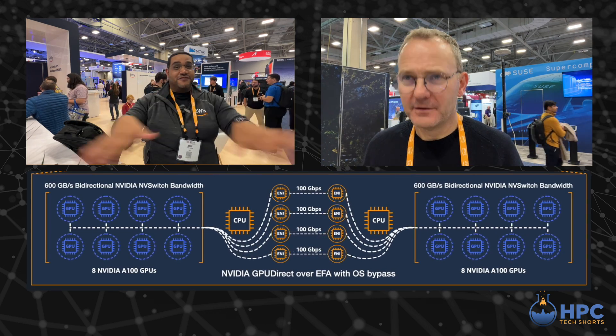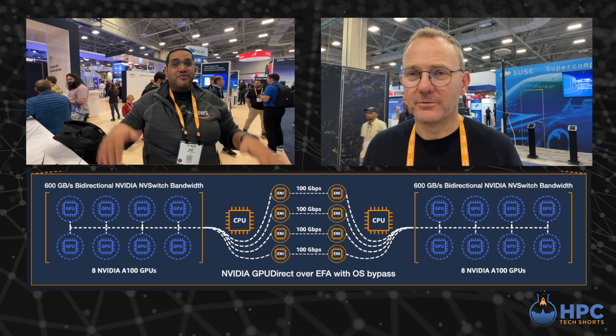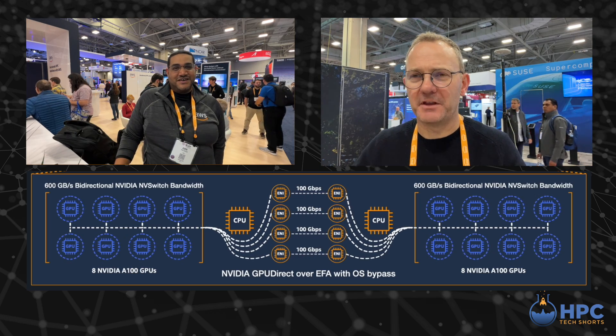Each EFA device is flooding each link, which is why we've got to have petabits of networking in the back in that fabric. The coolest, newest thing is GPU Direct RDMA — that's our coolest, newest thing in EFA.